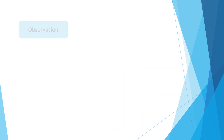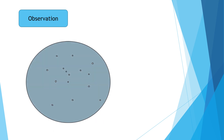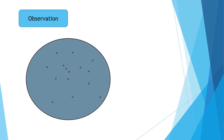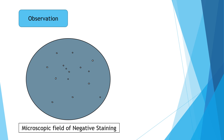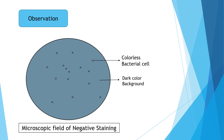Now let's see the observation. With the help of a diagram, I have tried to show you what kind of observation you will get under a microscope. This is a microscopic field of negative staining — you are going to observe a colorless bacterial cell with a dark colored background.